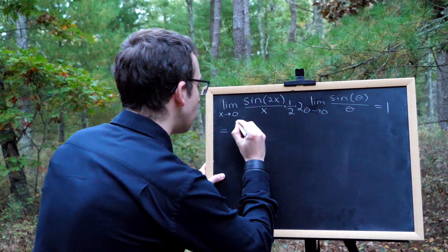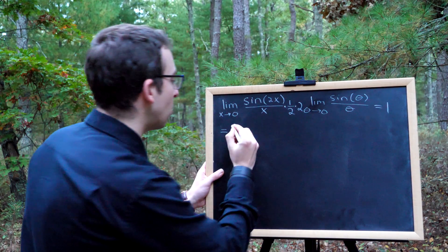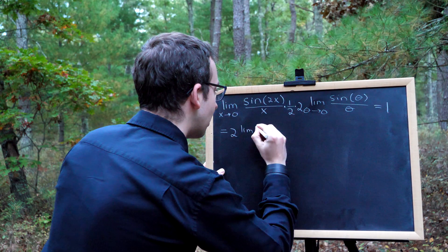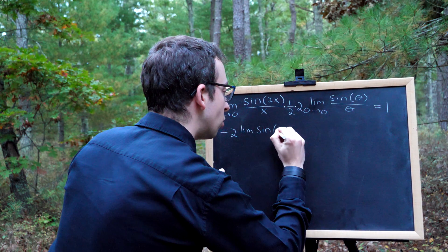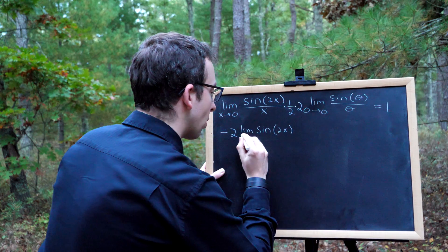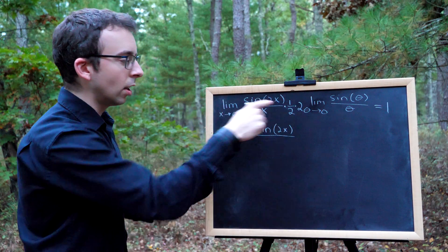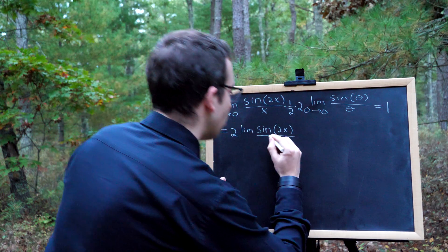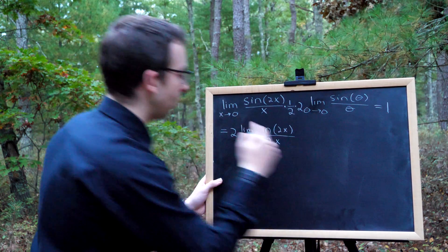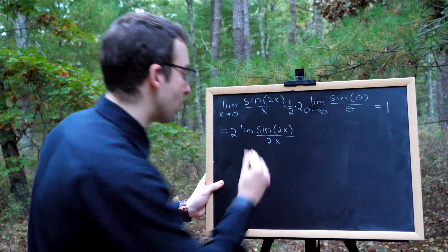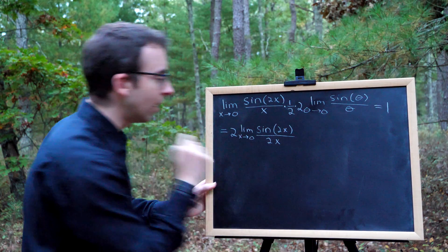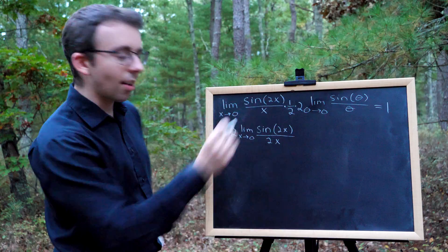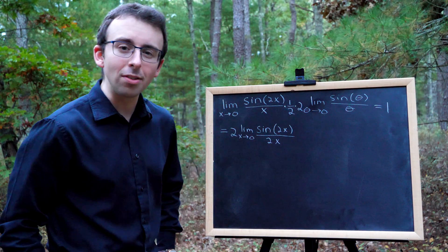So this is equal to, I'm taking the 2 out, so it's equal to 2 times the limit of sine of 2x over what? Well, I've got that one half in there, so now my denominator is 2x, just like I wanted. And this limit is with x approaching 0, so let's not forget to write that. So now we've got that it's equal to 2 times the limit of sine 2x over 2x as x approaches 0.